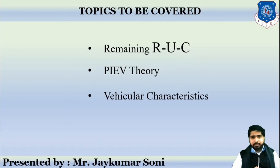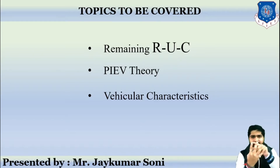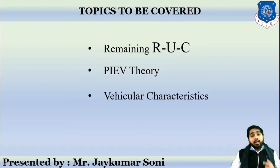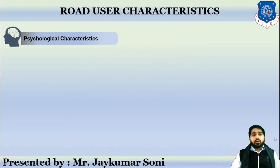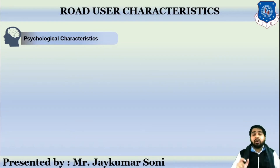Let me revise it once again. Traffic characteristics can be divided into two parts: road user and vehicle. Road user can be divided into four parts: physical, mental, psychological, and environmental. Physical can be divided into two parts: temporary and permanent. In this session, we are going to cover the psychological characteristics, emotional characteristics, and mental characteristics, because we have already covered temporary characteristics in the last session.